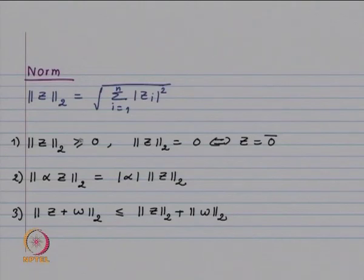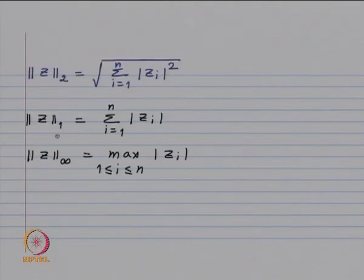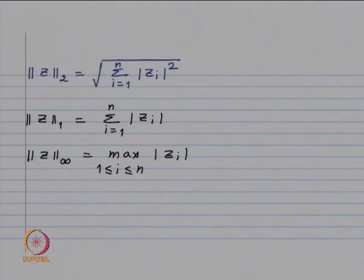Analogously one can define the one-norm and the infinity-norm. Norm z_1 is the summation from i equals 1 to n of mod z_i, and norm z infinity is the maximum of mod z_i for 1 less than or equal to i less than or equal to n. In the definition there is no difference — instead of real numbers we have complex numbers, but you are taking their modulus. For the two-norm we take the summation of mod z_i squared, and for the complex number it is important that you take the modulus of z_i squared.